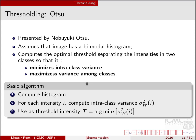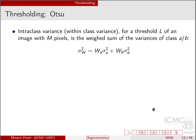The basic OTSU algorithm is as follows. First, compute the histogram. Then for each intensity i, compute the within-class variance sigma squared w of i, where i is the intensity being probed as a candidate threshold. We search for the correct threshold by probing every possible threshold. The optimal threshold T is the intensity that minimizes this within-class variance. The variance is weighted, which I will describe next.